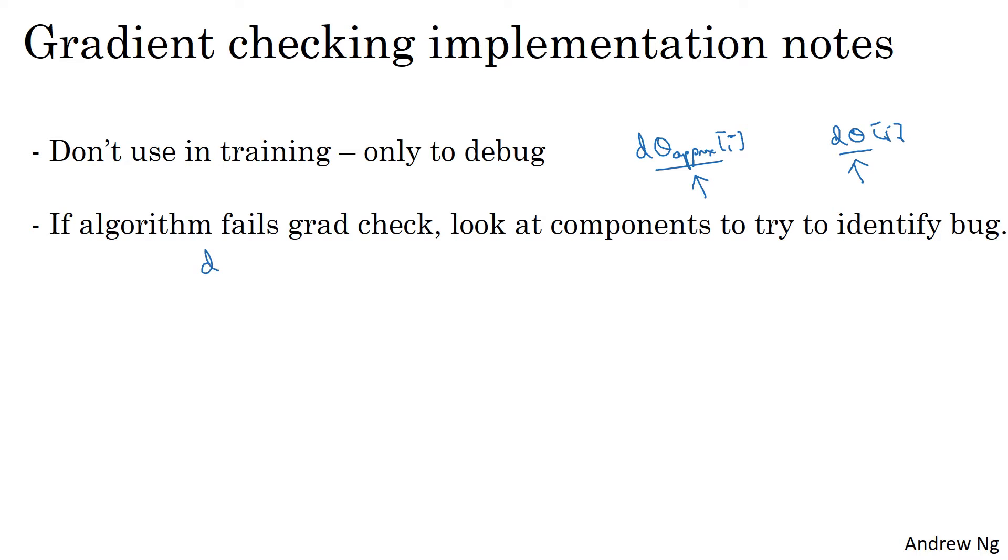So for example, if you find that the values of theta or d theta that are very far off all correspond to dbl for some layer or for some layers, but the components for dw are quite close, when you find this is the case, then maybe you find that the bug is in how you're computing db, the derivative with respect to parameters b.